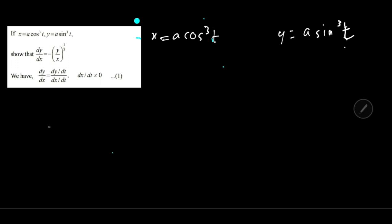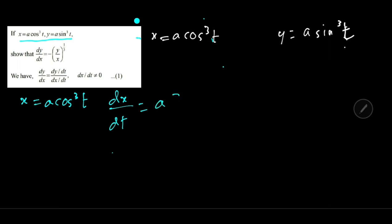This question was asked in the March 2018 paper for 3 marks. If x is equal to a cos cubed t and y is equal to a sin cubed t, then show that dy by dx equals the required result. This is a parametric equation, so dx by dt: x is equal to a cos cubed t, derivative gives a times 3 cos squared t.